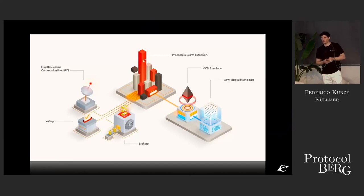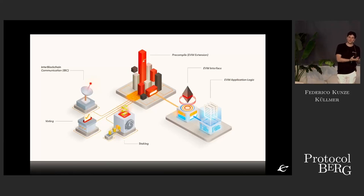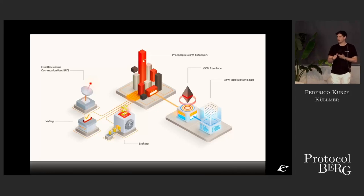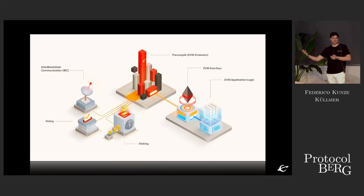All of this works with our latest technology on Mainnet, which is EVM extensions. EVM extensions provide stateful precompile contracts that enable seamless communication between smart contract layers, so that you can build applications that interface with native code — stateful in the sense of providing state transitions for staking, for IBC, for governance, and so on. All core transactions of Cosmos are going to be exposed to developers in the form of an ABI interface.